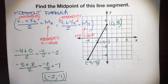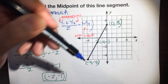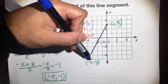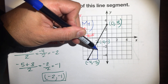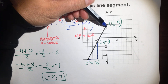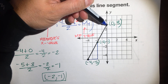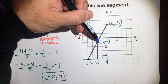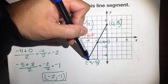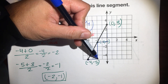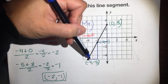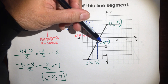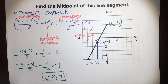To confirm this really is the midpoint, let's draw a right triangle. From the first endpoint, you'd go right 2 and up 4 to reach the midpoint. From the second endpoint, your friend would go left 2 and down 4. Same distance — horizontally 2, vertically 4 each way. So there you go — the midpoint is at negative 2, negative 1.